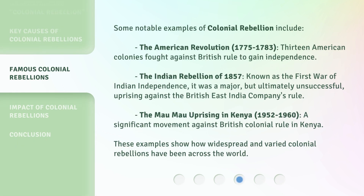Some notable examples of colonial rebellion include: the American Revolution (1775 to 1783), in which 13 American colonies fought against British rule to gain independence; the Indian Rebellion of 1857, known as the First War of Indian Independence, which was a major but ultimately unsuccessful uprising against the British East India Company's rule; and the Mau Mau Uprising in Kenya (1952 to 1960), a significant movement against British colonial rule in Kenya. These examples show how widespread and varied colonial rebellions have been across the world.